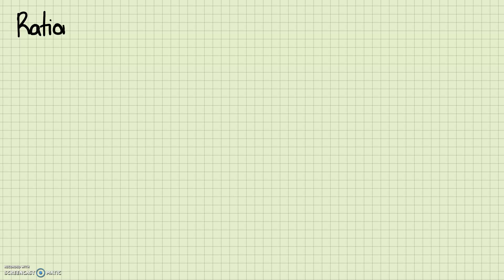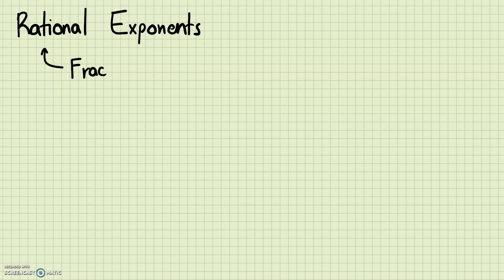Today we're going to be learning rational exponents. Rational is just another way of saying fractions, because all rational numbers can be written as fractions. Such as 3 squared, which equals 3 times 3, which equals 9. Today we're going to be focusing on the cases when the exponent is not a whole number — sometimes it can appear to be a fraction or be written as a fraction.